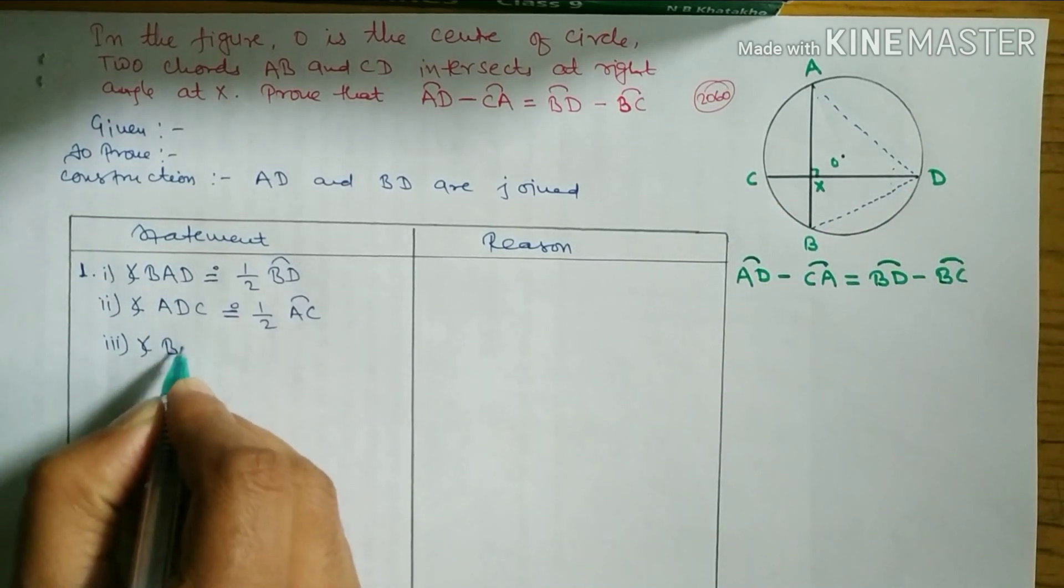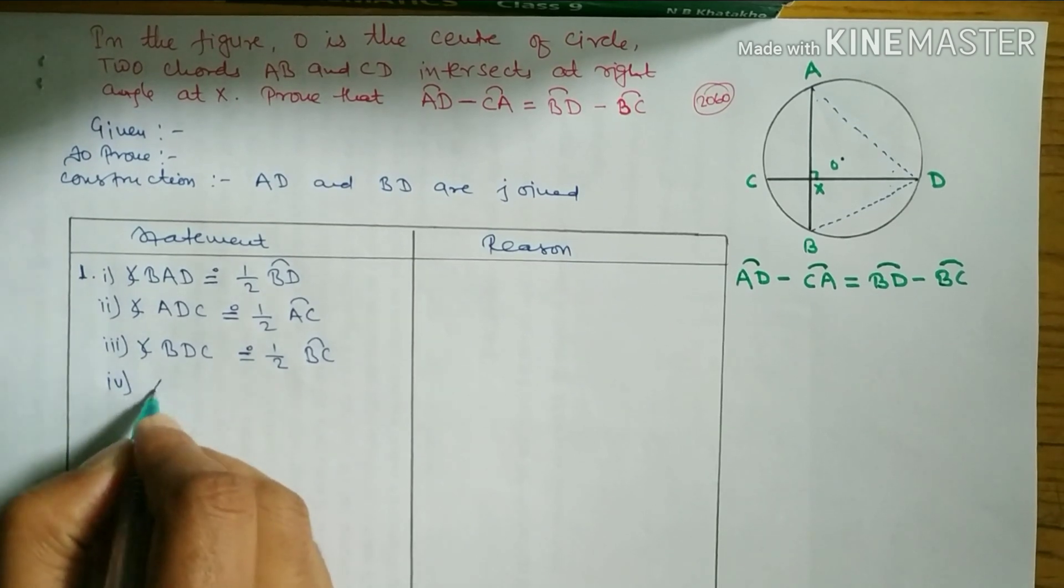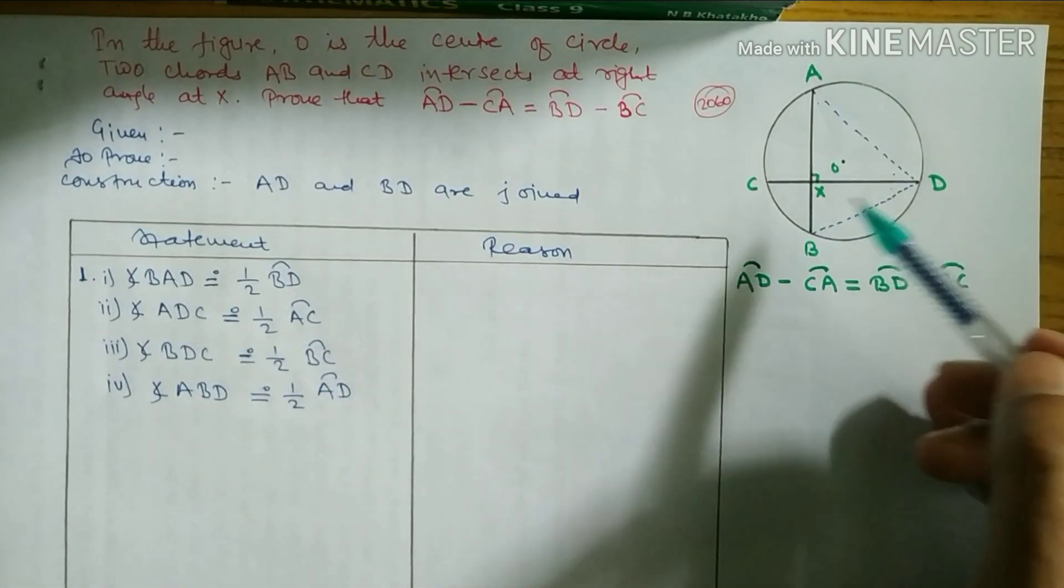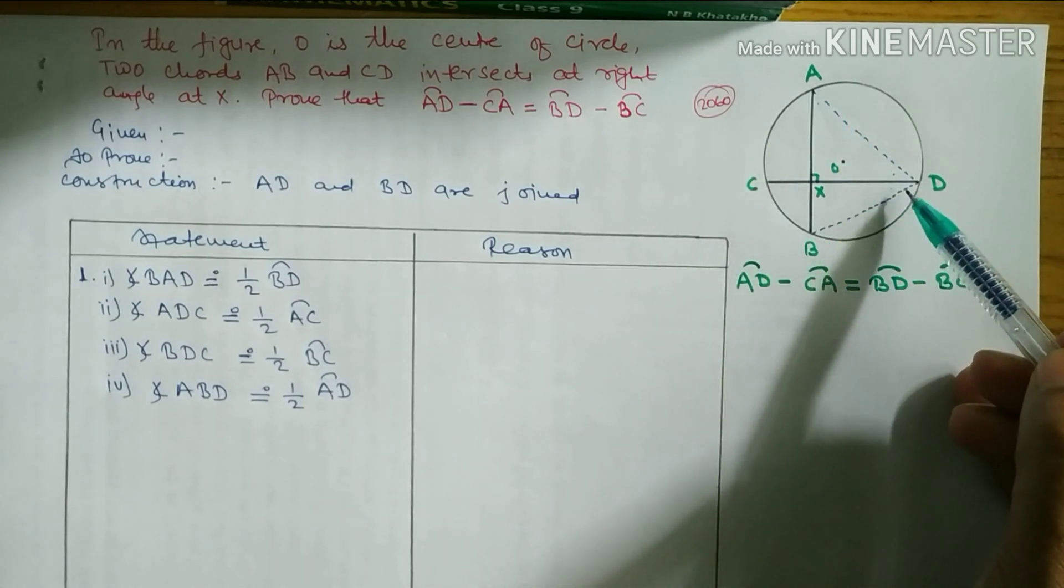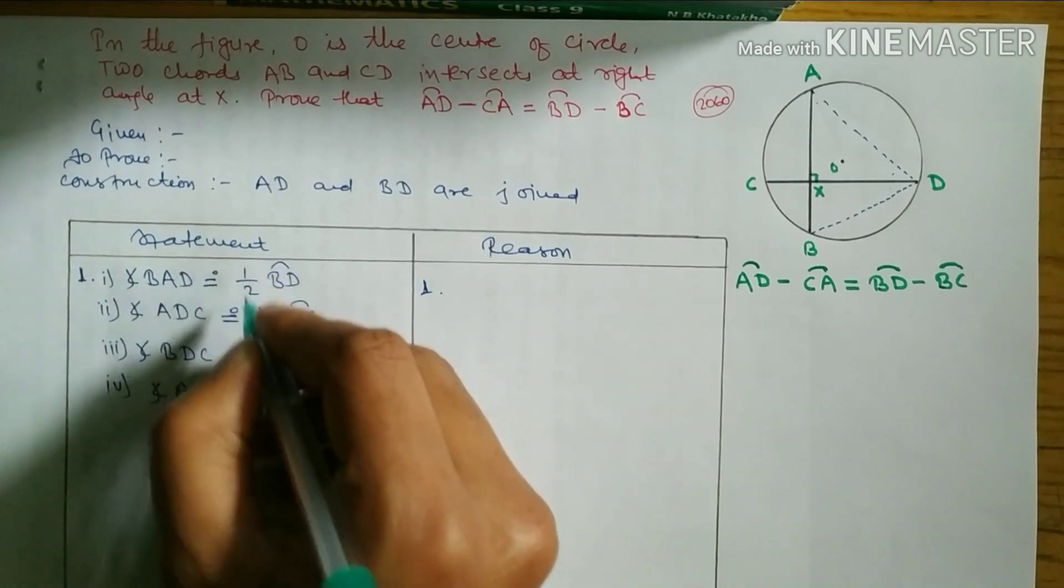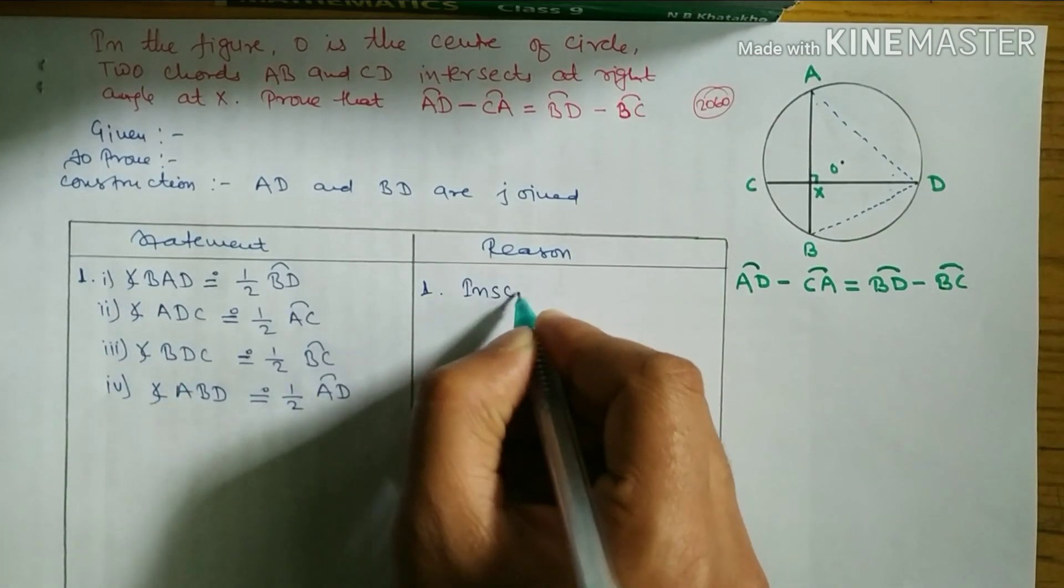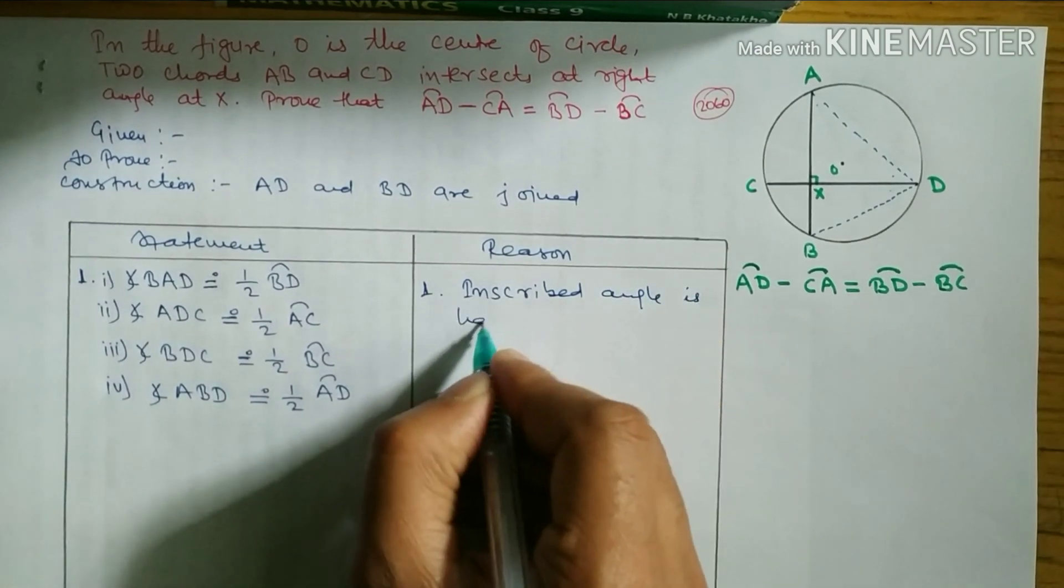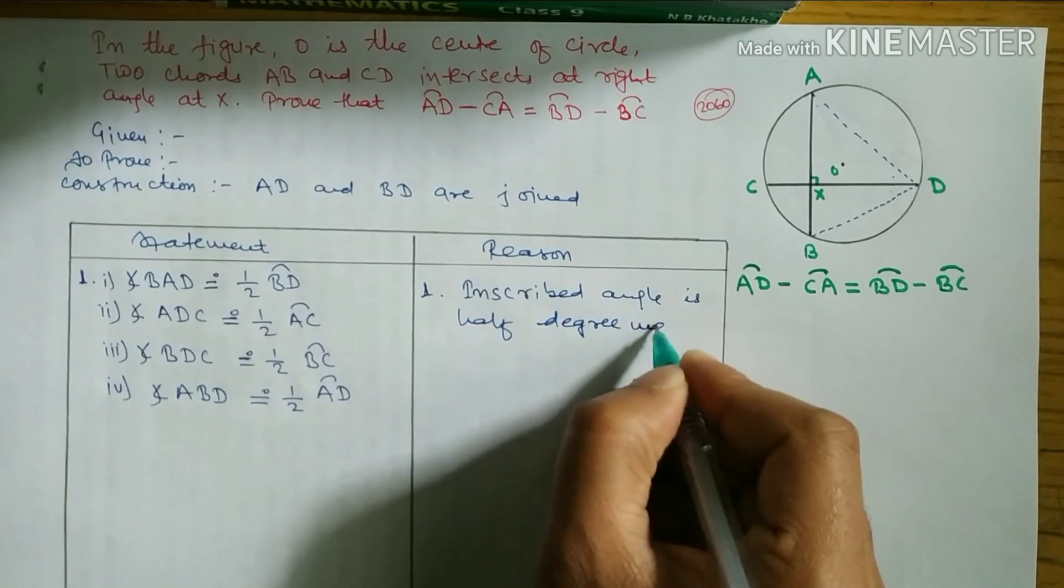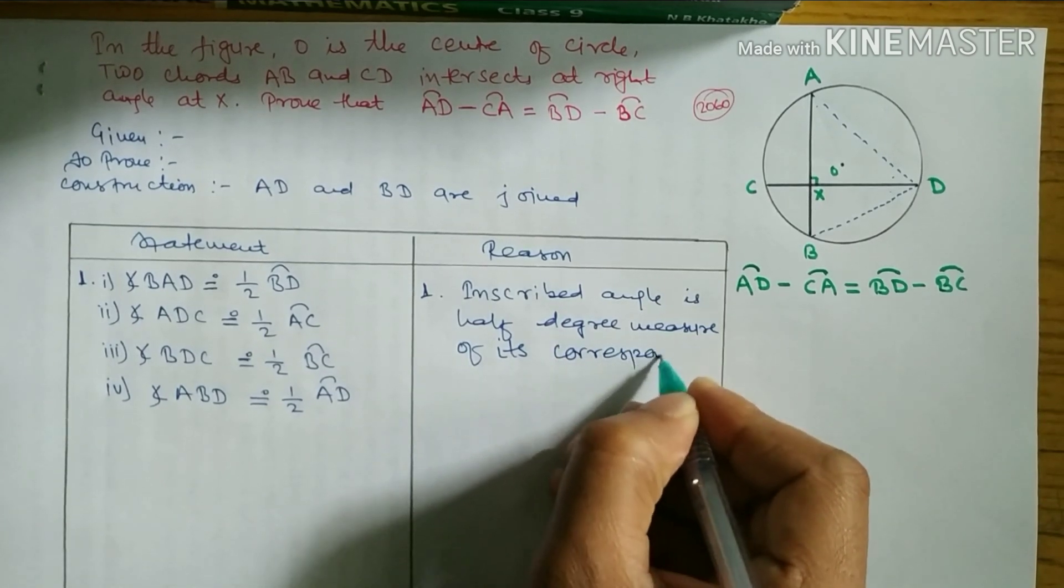Similarly in number four, angle ABD is equal to half measure of arc AD. Okay, reason is same for all. So here I'm writing: inscribed angle is half degree measure of its corresponding arc.